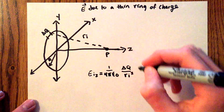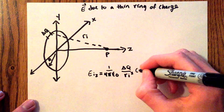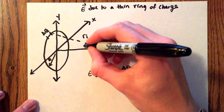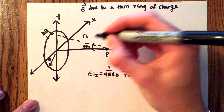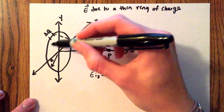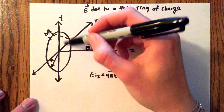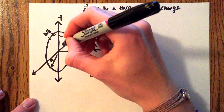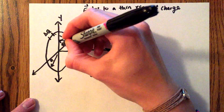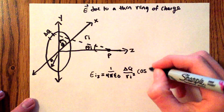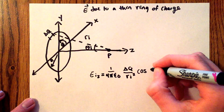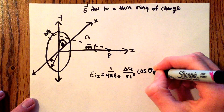And then we're going to have to include a cosine term. We'll call this angle theta_i, and we also have to take into account the angle going around the thin ring, so we'll call that angle phi. So we'll have the cosine of theta_i.